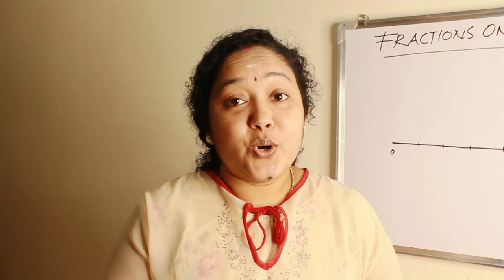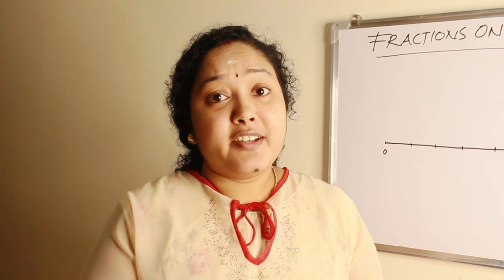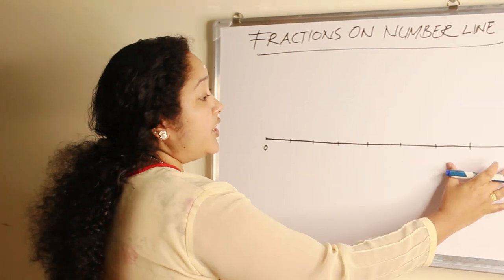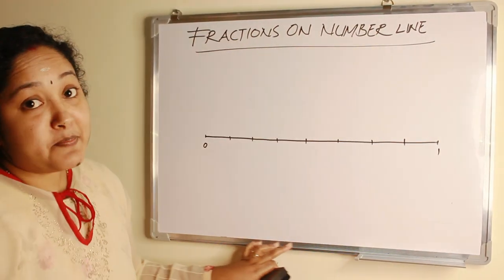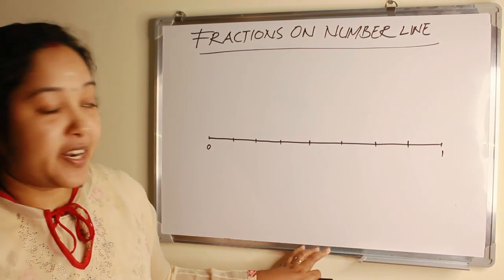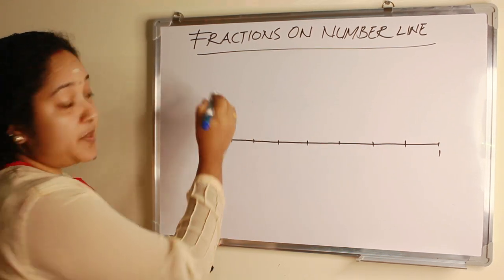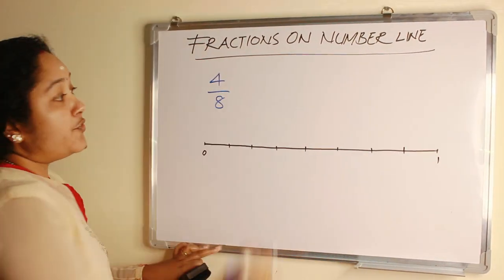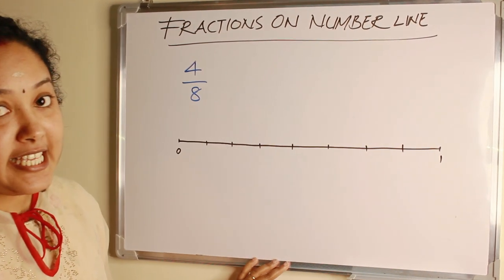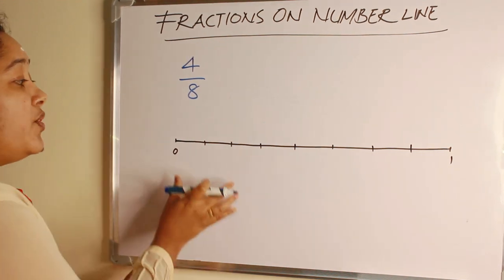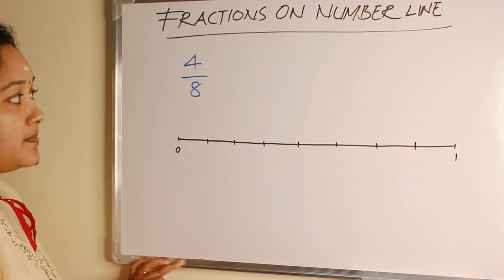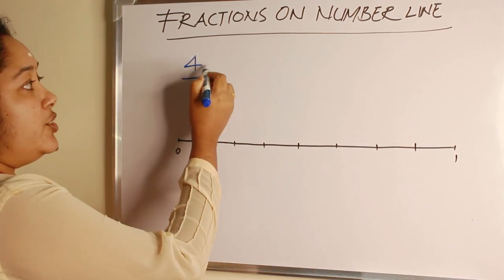Fractions on number line. To represent fractions on number line, first divide one unit into as many equal parts as denominator of a fraction. For example, 4 by 8. The denominator of the fraction is 8.